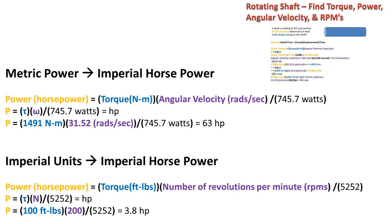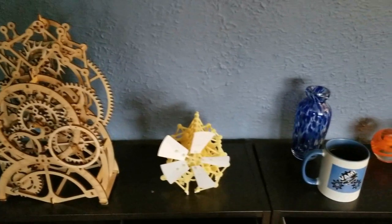For imperial, we can take the torque in foot pounds and multiply times the number of revolutions per minute or RPMs and divide by 5252 to get horsepower of the rotating shaft. I once again include an example with numbers for your reference.